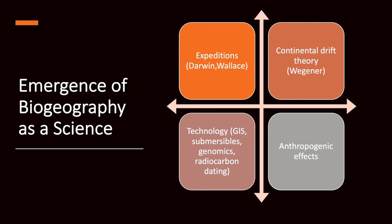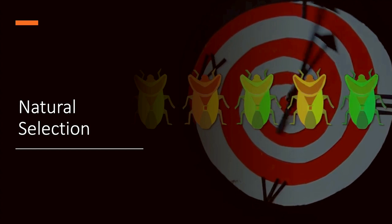Biogeography came to the forefront thanks to four major breakthroughs. The first was the expedition of Darwin and Wallace — we know the story of how Darwin published his book, went to the Galapagos Islands, and how Wallace created the theory of natural selection and went to the Malay Islands.